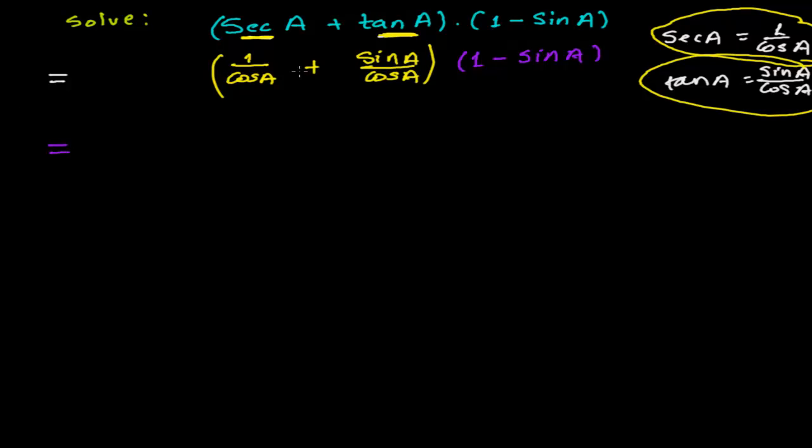This is cos A and this is also cos A. I'm going to take the LCM, so I'll get cos A as the denominator. I'm going to get a very good thing here: 1 plus sin A in the numerator, and 1 minus sin A multiplying.